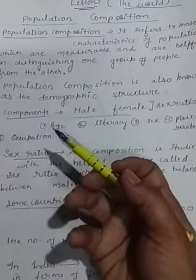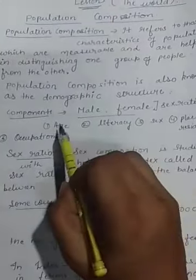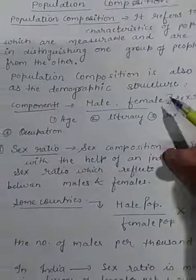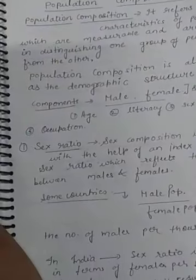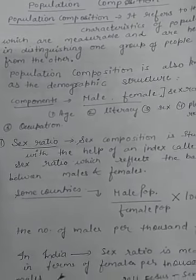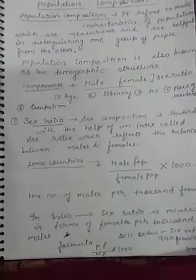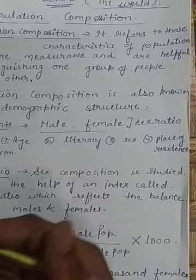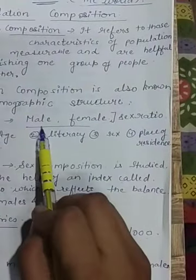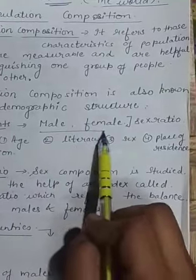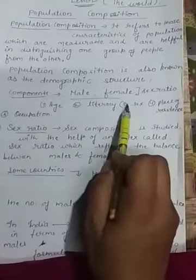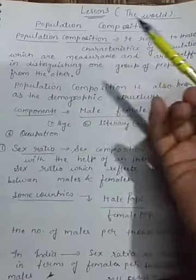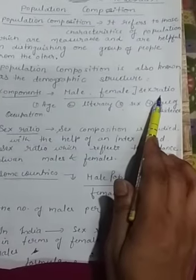Population composition tells us who is in the population — people are either male or female. Males and females are responsible for migration from one place to another. Population composition is therefore dependent on migration, and on the quantity of males and females surviving on earth. Population composition depends on the sex ratio, which is based on the male and female factor.